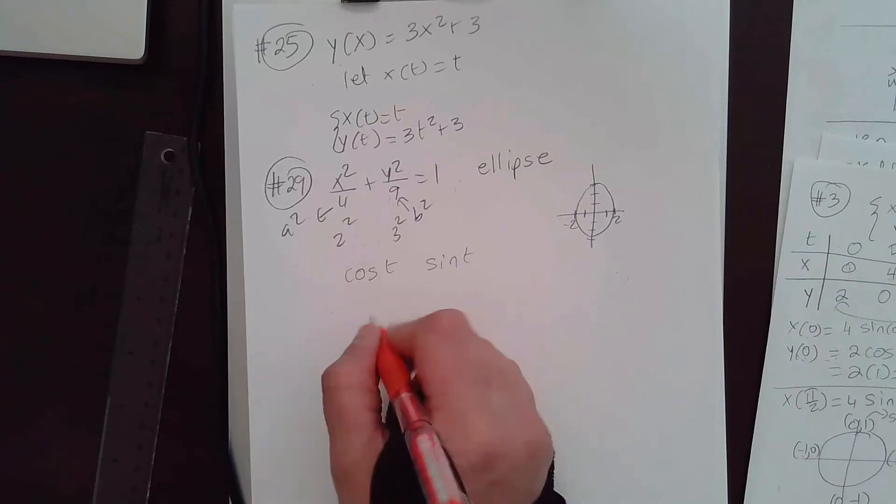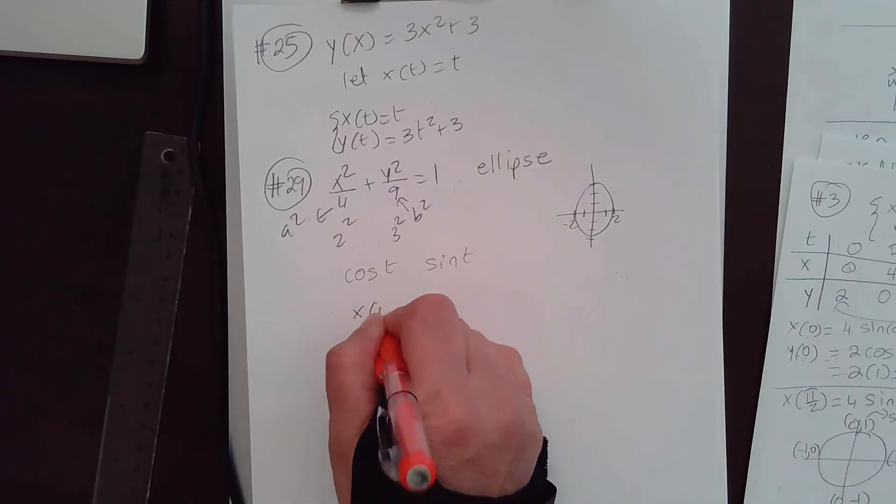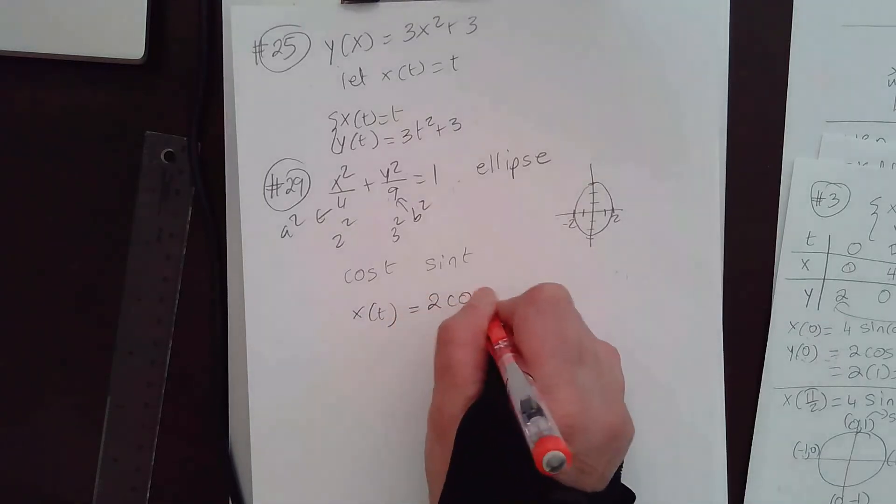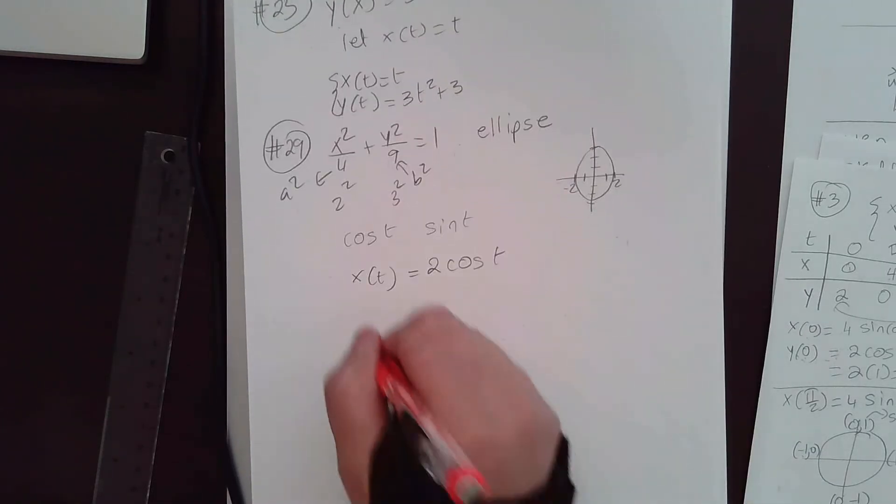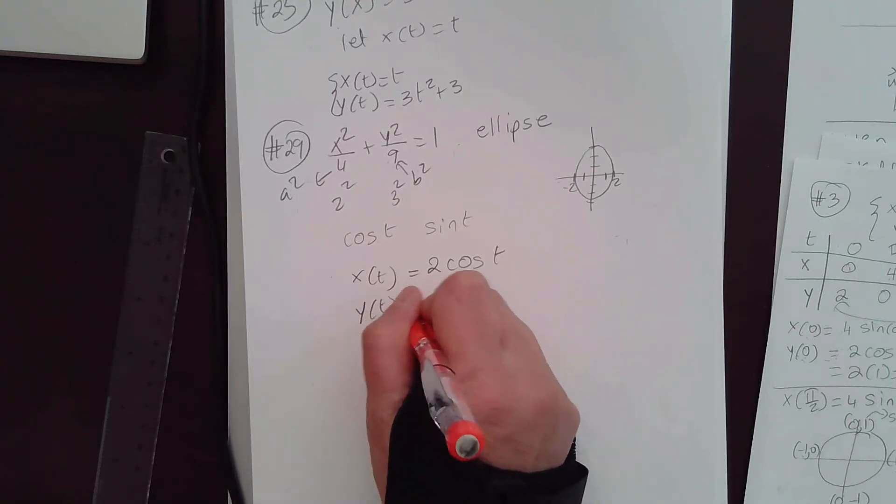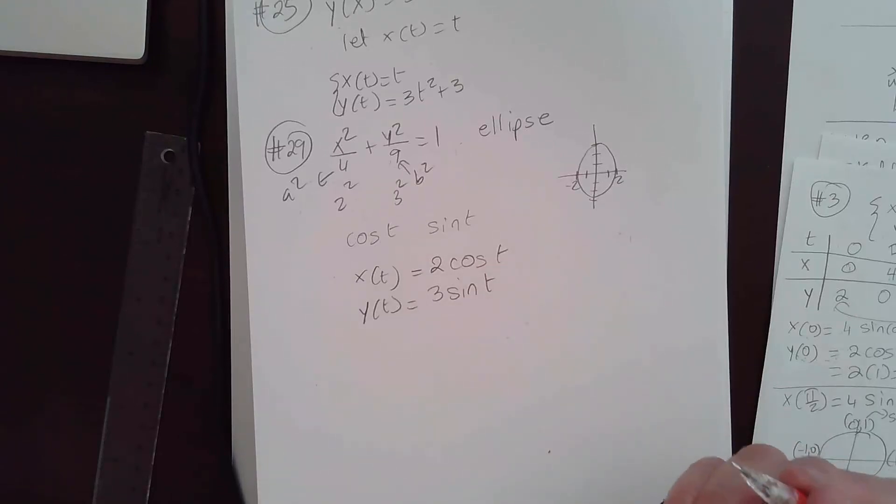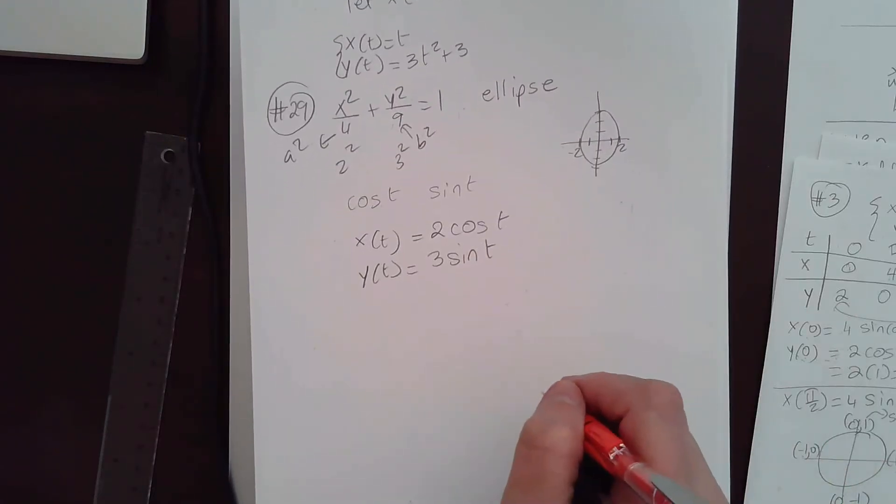So, the way you can think about this is, you can write this as, x(t) is 2 cosine t and y(t) is 3 sine t. Okay? You can check if that would work.